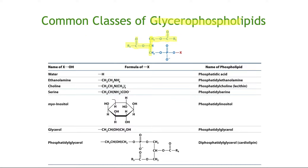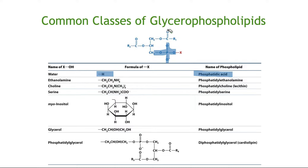The phosphate group is at carbon three, and then you have a phosphodiester linkage to a polar or charged head group. If that head group is simply hydrogen, then the compound is known as phosphatidic acid. Glycerophospholipids are really named as derivatives of phosphatidic acid, which is the parent compound. You have the phosphate group with different groups attached to it; if it's a hydrogen, that is the parent compound phosphatidic acid.